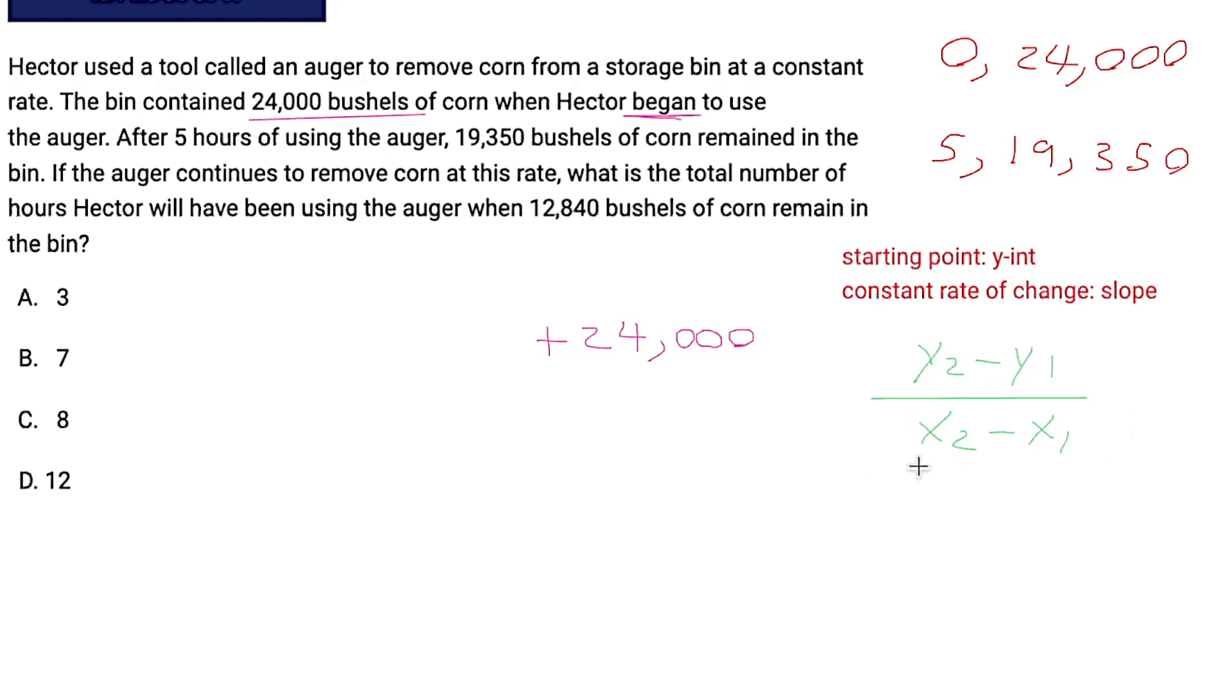So if we use the points we have here, we would get 24,000. And I'm just choosing that number first, because it's bigger. And I don't want a negative number, because I don't feel like it minus 19,350 divided by, of course, now we'll get negative regardless, zero minus five, I'm running out of room. So I'm going to go over this direction, if that's all right. So I threw that into the calculator, and we get basically negative 4650 over five, which is equal to negative 930.